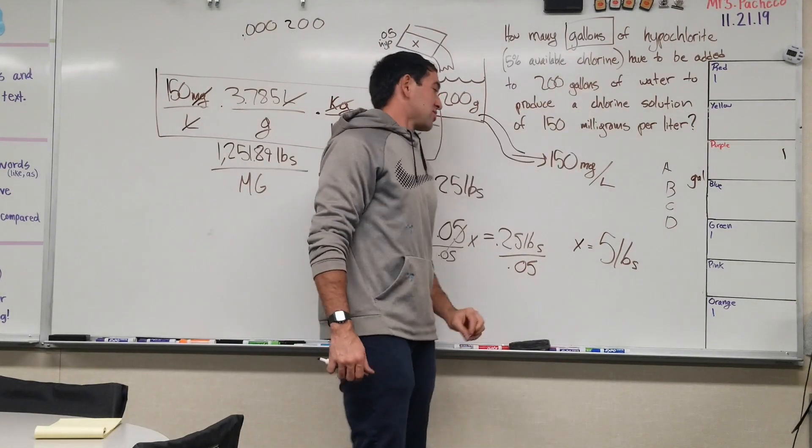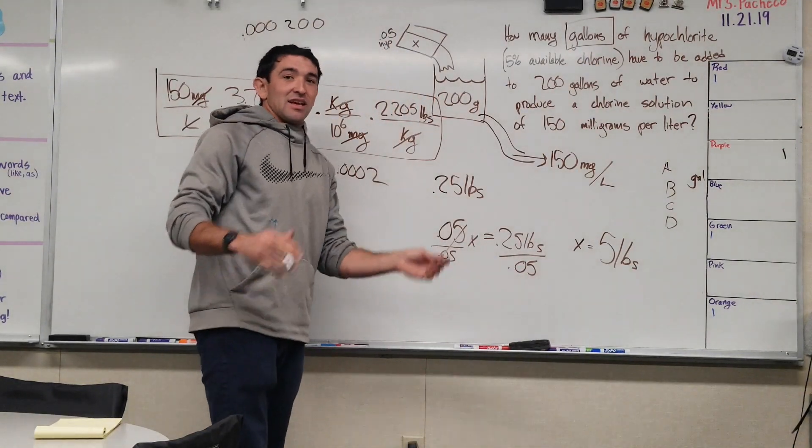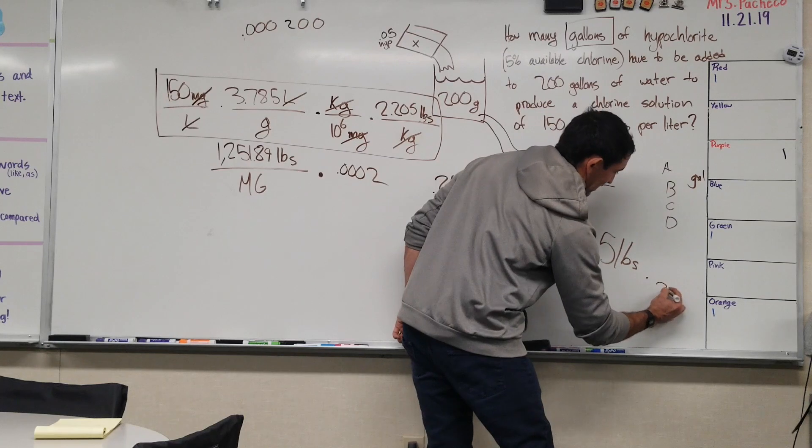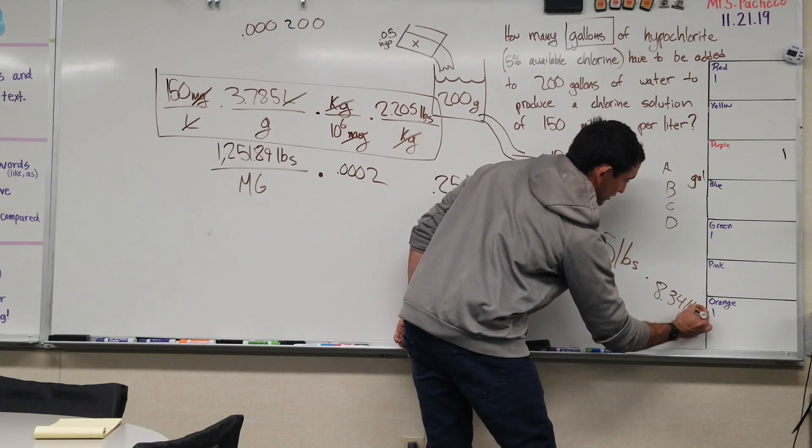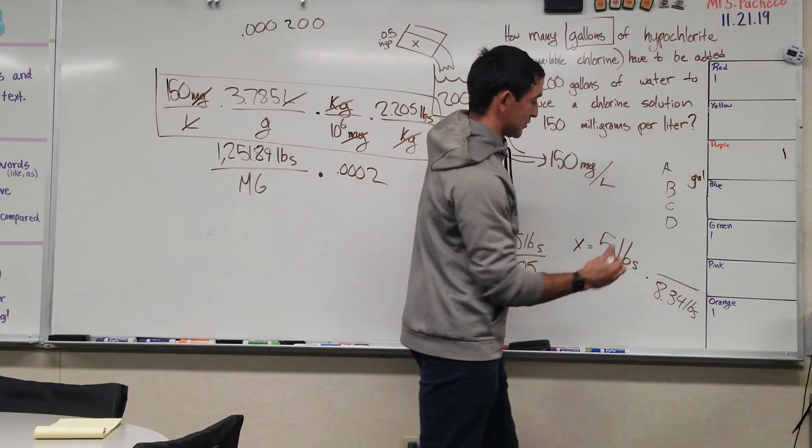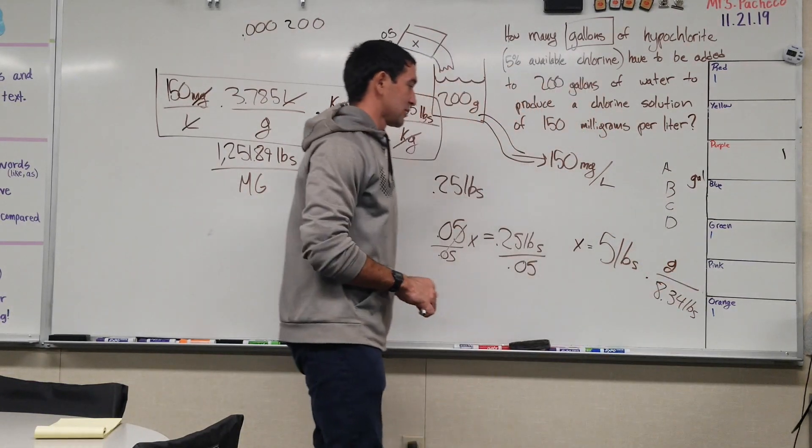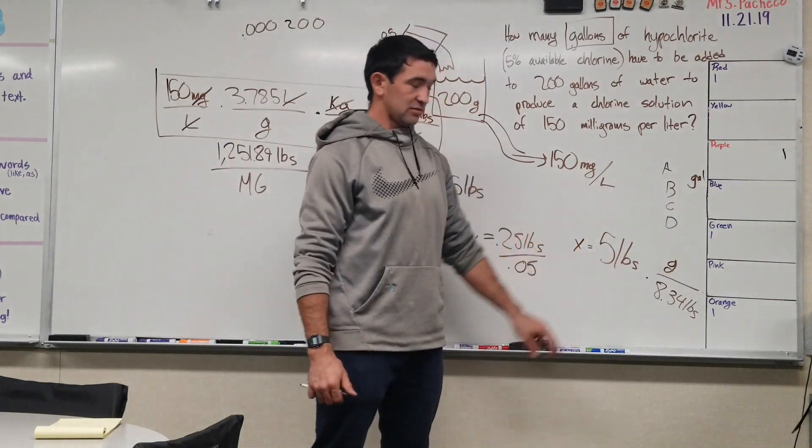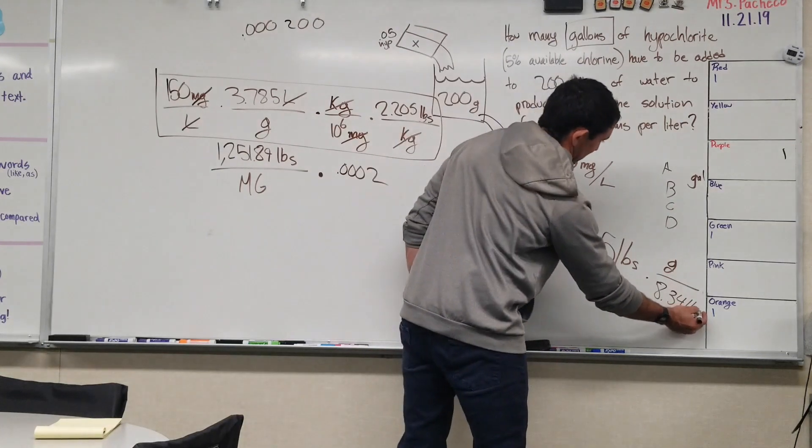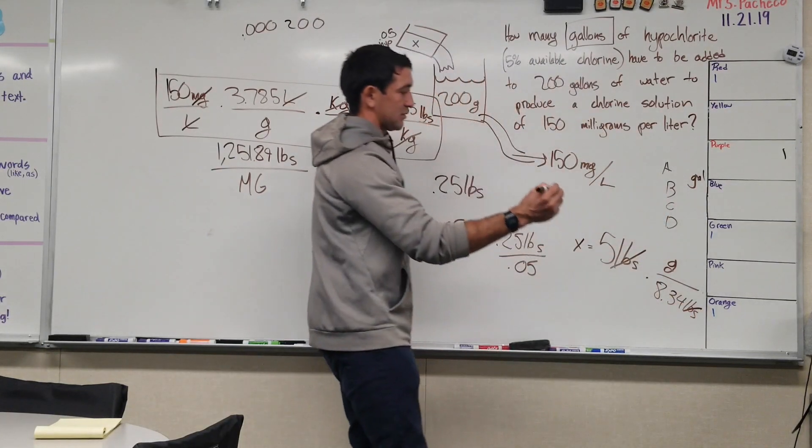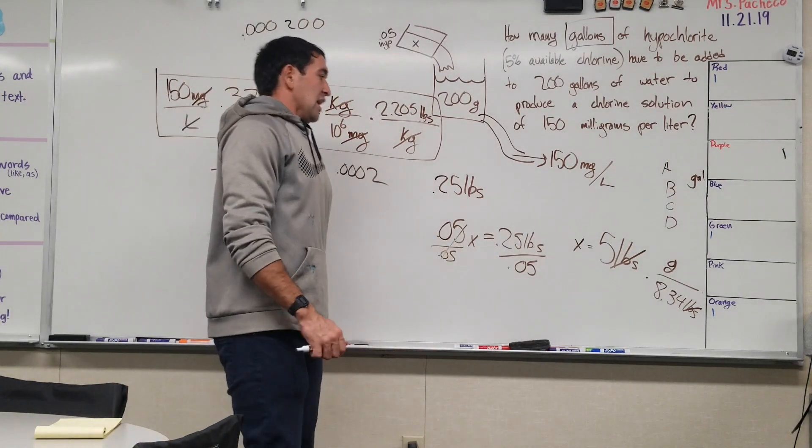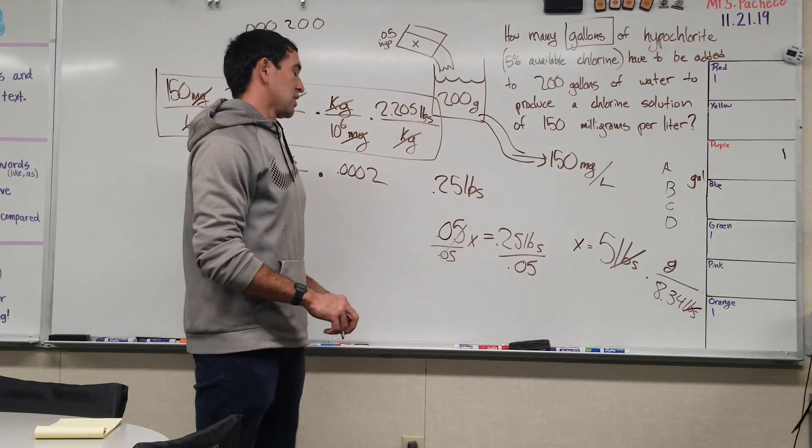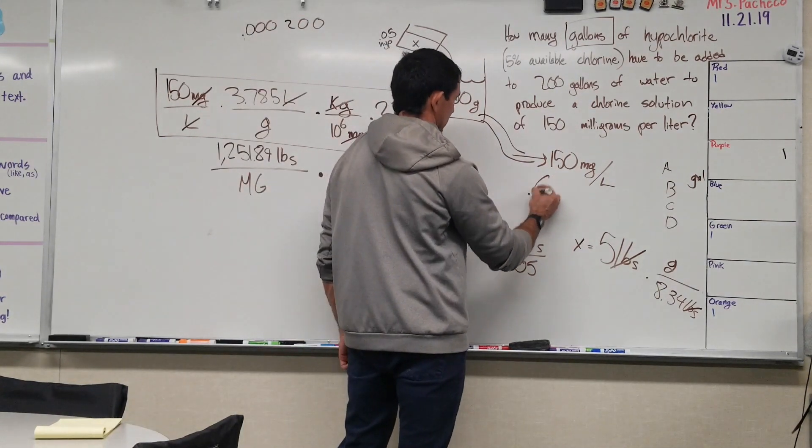But we don't need pounds, we need gallons. So how do we convert pounds to gallons? How many pounds are in a gallon? 8.34. So multiply it by 8.34 pounds under, sorry I said that backwards, but under a gallon. My mind works a weird way sometimes. But so basically you just divide 8.34 by 5. That just makes it simple so you can see the pounds are canceling out to give you a gallon. And when you divide 8.34 by 5, you are left with 0.6 gallons.